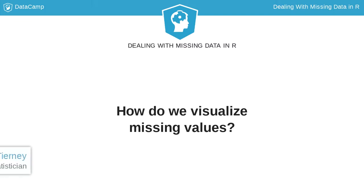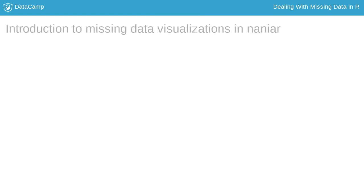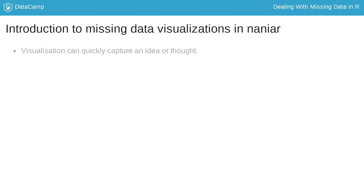We now know what missing values are, how they work, how to count them and summarize them. Now let's look at some of the built-in visualizations that come with Narnia. Data summaries are very useful, but sometimes an idea or a thought can be quickly captured with a visualization.